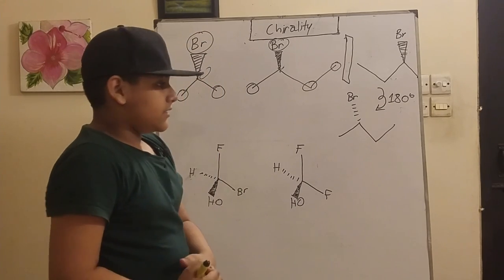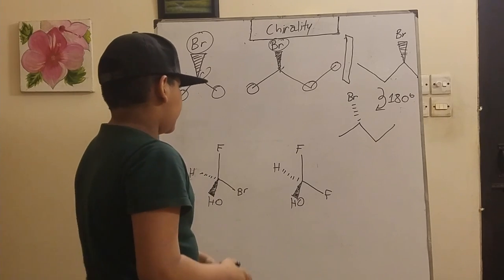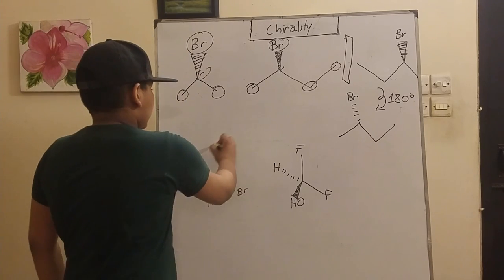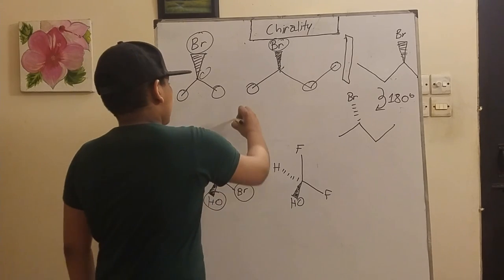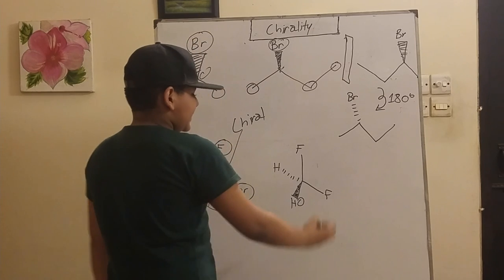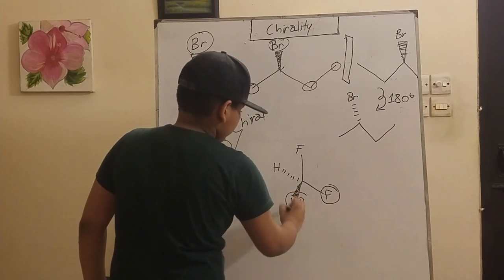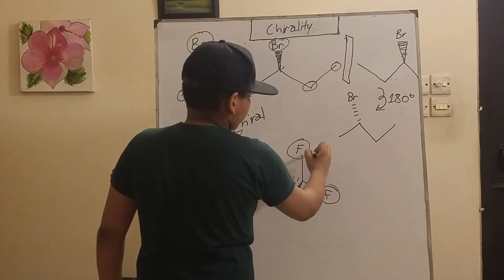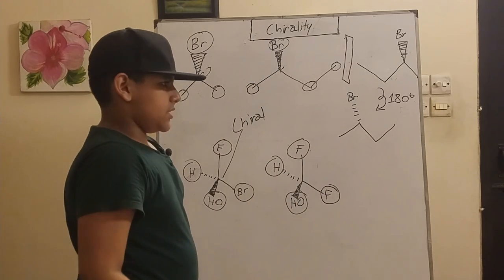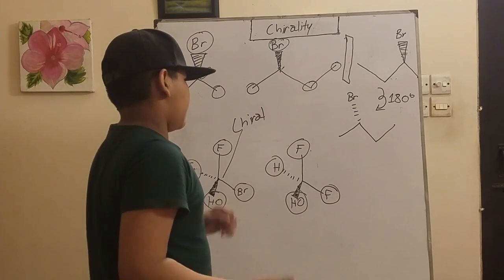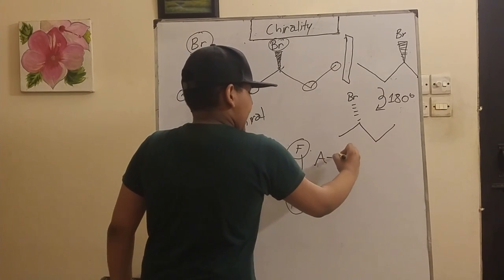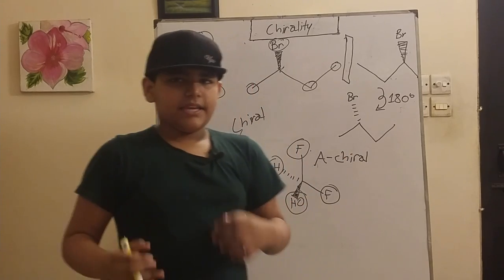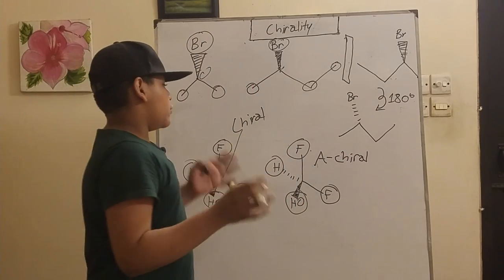Now that we've got that covered, let's go through some more examples. Now, as we can see already from here, we have four different substituents, so this will be chiral. Now this molecule has two of the same substituents, so they will overlap properly if you were to go and test it. So this molecule is achiral—'a' being the substitute of 'not chiral.'